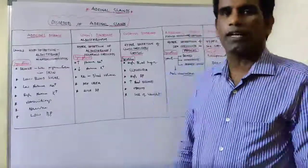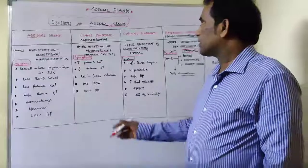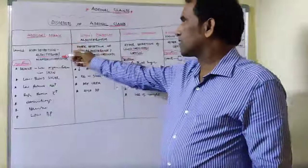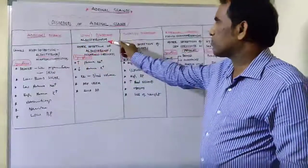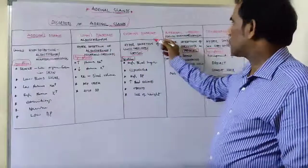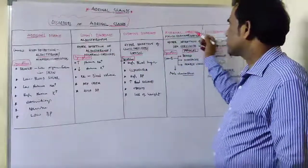Disorders of Adrenal Glands. The adrenal gland disorders include Addison Disease, Conn's Syndrome, Aldosteronism, Cushing Syndrome, Adrenal Virilism, and Pseudohermaphroditism.